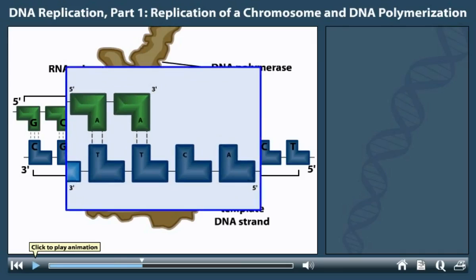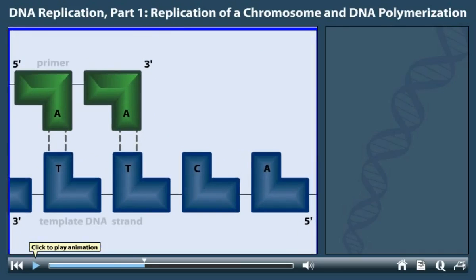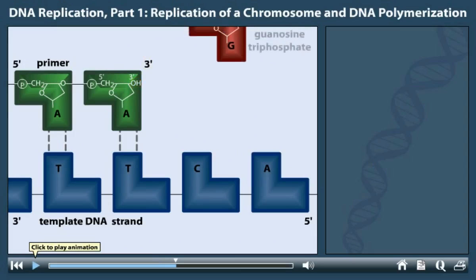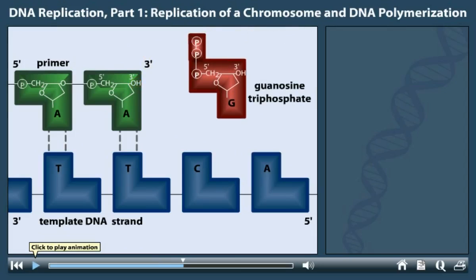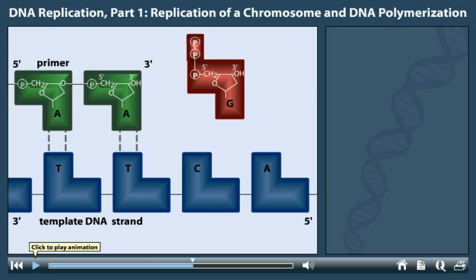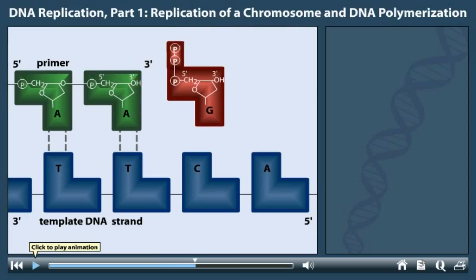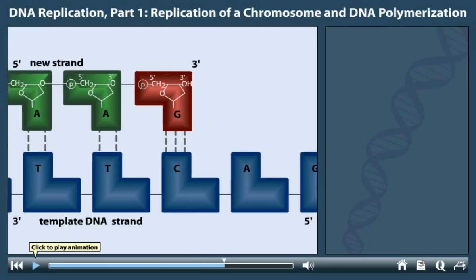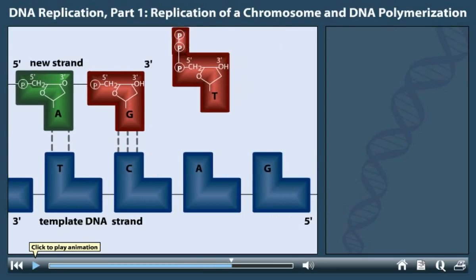Taking a closer look at the nucleotide polymerization reaction, the three prime end of the primer contains a free three prime hydroxyl group. The three prime hydroxyl reacts with the five prime end of the next free nucleotide to be added. Free nucleotides continue to be added to the growing DNA strand by the same type of reaction.